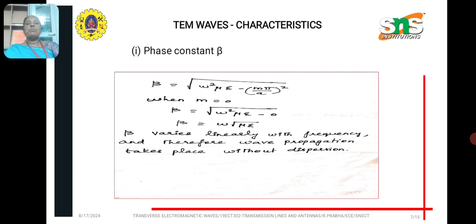beta general expression root of omega square mu epsilon minus M pi by A the whole square. For TEM wave, M is equal to zero, by substituting M value zero, we get beta is equal to omega root of mu epsilon. Beta varies linearly with frequency, and therefore, wave propagation takes place without any dispersion.